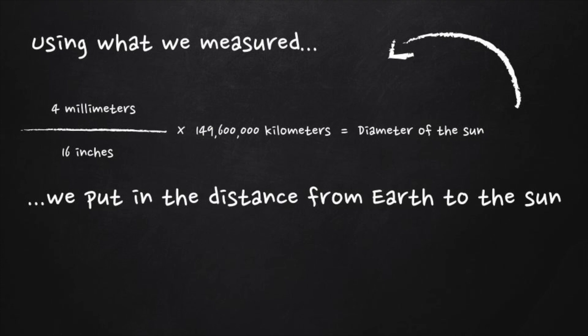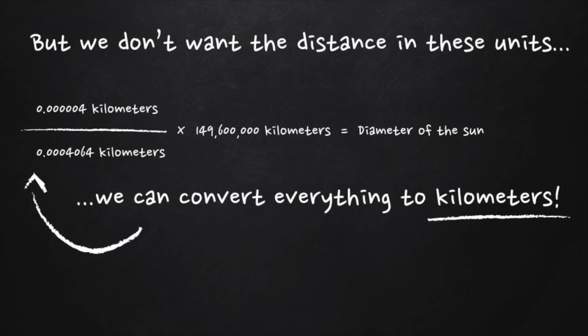But first, one more step. I measured in millimeters and inches, but the distance to the sun is in kilometers. The sun is pretty big, so kilometers seem like the best unit to use. I will convert both the diameter in millimeters to kilometers and inches to kilometers. So then I can divide, then multiply to calculate the diameter of the sun in kilometers.